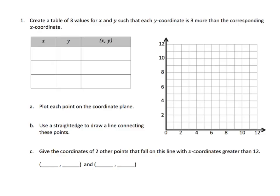Let's read the problem. It says create a table of three values for x and y such that each y-coordinate is three more than the corresponding x-coordinate. What does that mean? It means we're going to take x and we're going to add three to it to get y, so I'm going to write the expression y equals x plus three.